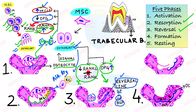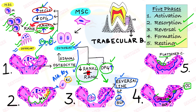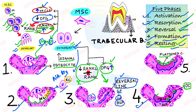In the fourth step — formation — osteoblasts lay down new bone over the cement line. Osteoblasts that become embedded within the forming bone are now called osteocytes. Finally, when bone formation is complete, the remaining osteoblasts enter a resting phase, becoming flattened bone lining cells over the surface. These are the five phases in trabecular bone: activation, resorption, reversal, formation, and resting.